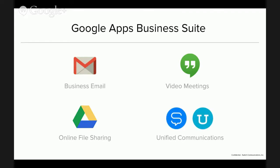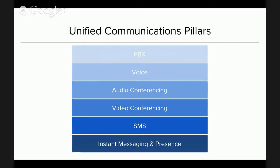As good as Google Hangouts is, when you look at unified communications, it's not providing the entire stack. That's where the products from Switch come in — Switch for your core business telephony, and Uber Conference for the audio side of conferencing. When we look at unified communications in this space, you really haven't seen the same level of shift to the cloud in the UC side of things as you have on the core email and productivity side. The six major components of unified communications are: instant messaging and presence, SMS, video conferencing, audio conferencing, voice, and PBX — which gives you core business phone features like an 800 number, main line, call routing, transfer, call groups, and departments.